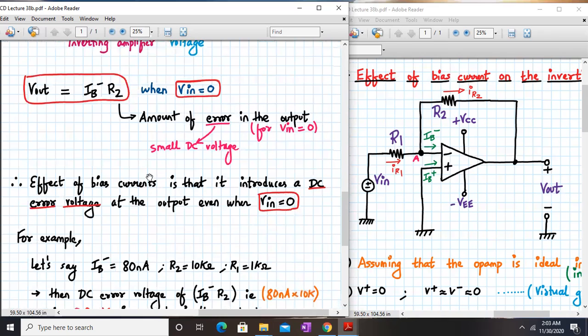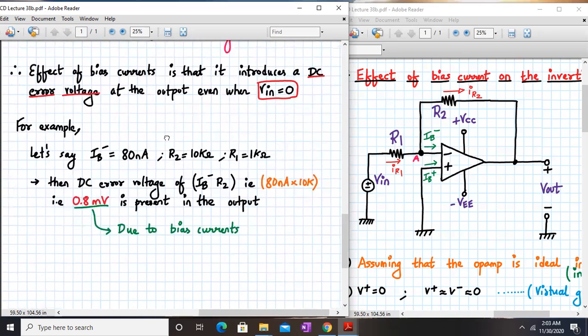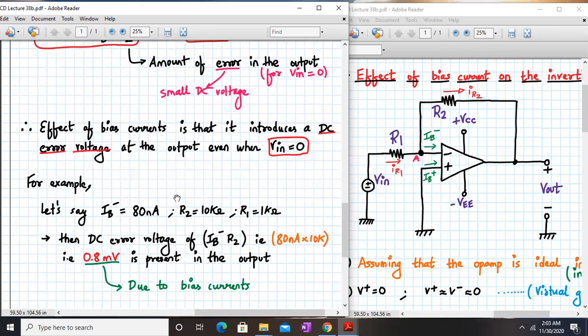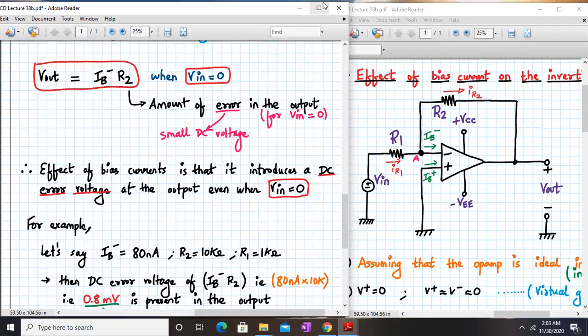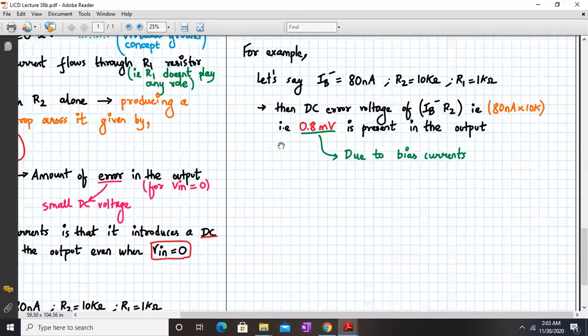So the effect of bias current again is introducing a DC error voltage at the output even when Vin is equal to zero. So again, if we use the same example, Ib minus is 80 nano, R2 is 10k, DC error voltage is Ib minus into R2, that is 80 nano into 10k, which will be around 0.8 millivolts precisely. So this 0.8 millivolt is present at the output even without applying any input, and this is due to input bias current.